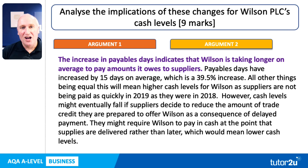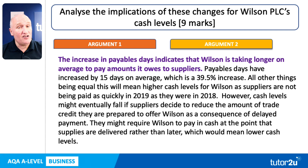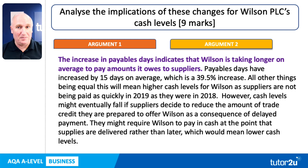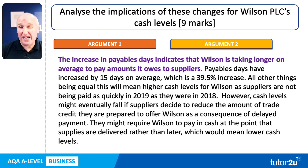What about payables days? The increase in payables days means that Wilson is taking longer on average to pay amounts it owes to suppliers. How does this impact cash levels? Payables days have increased by 5 days on average, which is approximately a 13% increase. All other things being equal, this means higher cash levels for Wilson, because suppliers are not being paid as quickly in 2019 as they were in 2018.